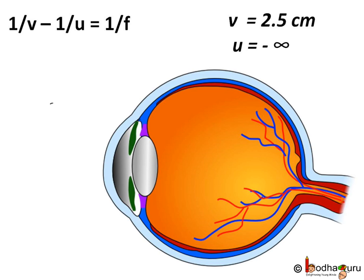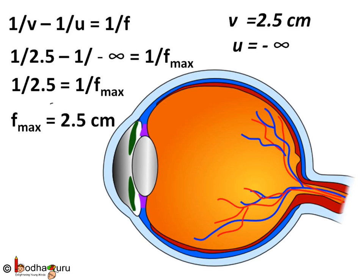And as the object is at infinity, u here is minus infinity. Now putting the values of u and v, we get 1/2.5 - 1/(-∞) = 1/f_max, where f_max is the maximum focal length of the eye lens. Now 1/∞ is equal to 0. So we can say 1/f_max = 1/2.5 or f_max = 2.5 cm. So the maximum focal length of the eye lens is equal to 2.5 cm.